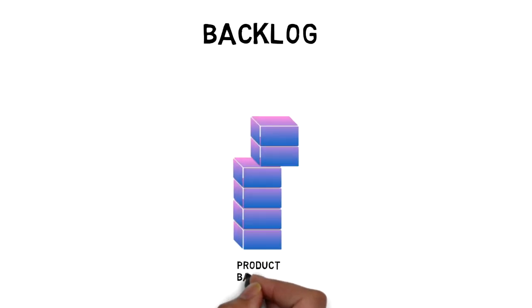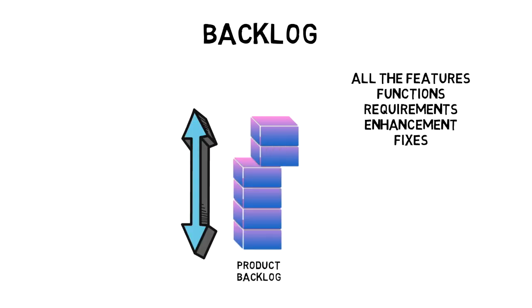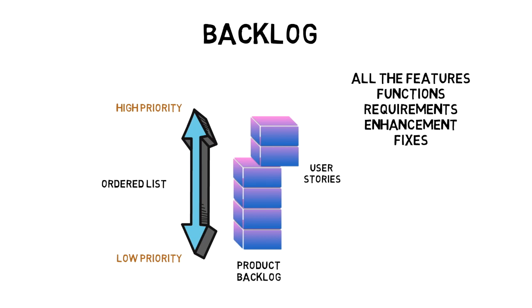One of the key artifacts of agile is the idea of a backlog. A product backlog is the entire list of all the features, functions, requirements, enhancements, and fixes identified as being needed to produce a product or a solution. It is one of the first things a team should have in order to start developing their products. In general, these features are broken down into user stories, and these user stories are the backbone of the product backlog.